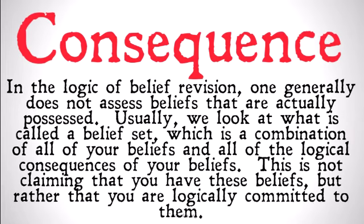First, consequence. In the logic of Belief Revision, one generally does not assess beliefs that are actually possessed. This is a problem we ran into with doxastic logic because a lot of times people believe pretty ridiculous things — they often believe contradictions, or they believe in the laws of non-classical logic as opposed to classical logic. So, usually for belief revision theory, we look at what is called a belief set, which is a combination of all of your beliefs, all of the logical consequences of your beliefs, as well as any tautologies, because anything implies a tautology.